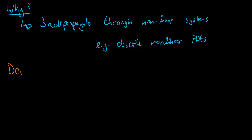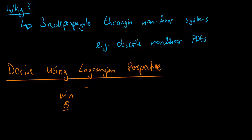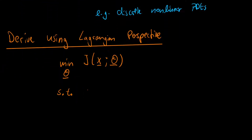Let's derive it using the Lagrangian perspective. In the last video we used implicit differentiation, which is a little simpler to understand, but the Lagrangian is equally valid. The idea is that instead of just obtaining gradients, we actually pose an optimization problem: minimize over all parameter vectors theta our loss function j, which depends on x and optionally on theta, subject to the constraint that f of x and theta equals the zero vector.